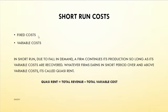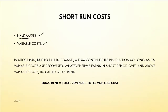Since Quasi Rent applies in the short run, we consider short-run costs, which are of two types: fixed cost and variable cost. Fixed cost remains fixed regardless of output — for example, rent. Variable cost varies. In the short run, due to a fall in demand, the firm must continuously keep producing as long as the variable cost is being recovered.